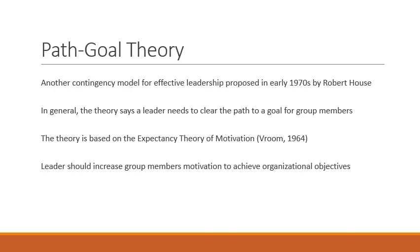The leader increases team motivation in two ways. The first is clearing the path to goal, and the second is increasing the rewards that followers desire. Clearing the path means the leader clearly provides task descriptions, work procedures, role descriptions, and performance standards, giving followers increased knowledge of the task and confidence in accomplishing the goal. Increasing rewards means the leader learns which rewards are important to a follower, whether intrinsic rewards from the work itself or extrinsic rewards such as pay raises or promotions.